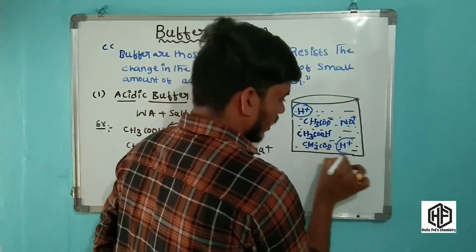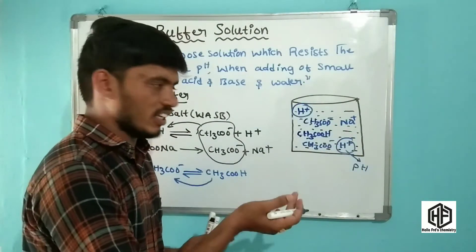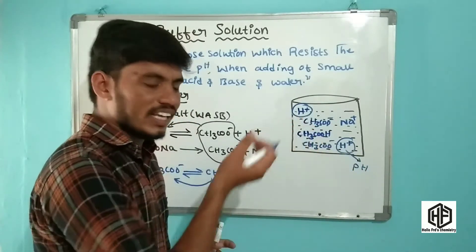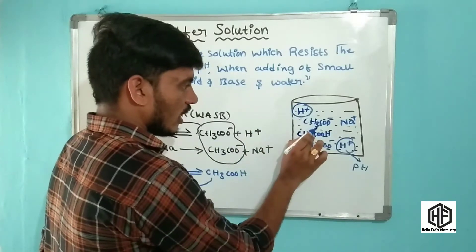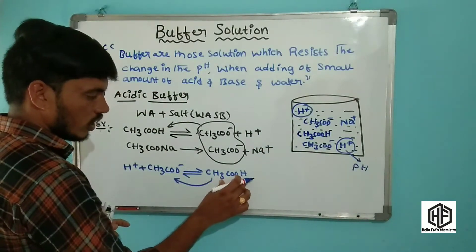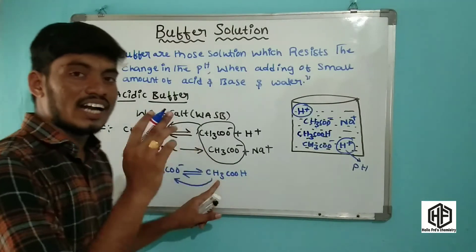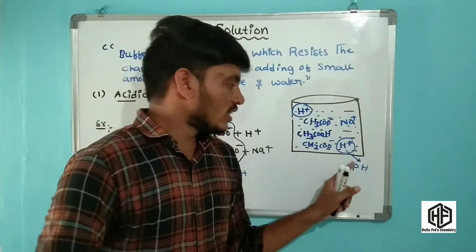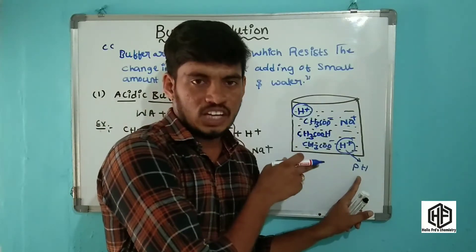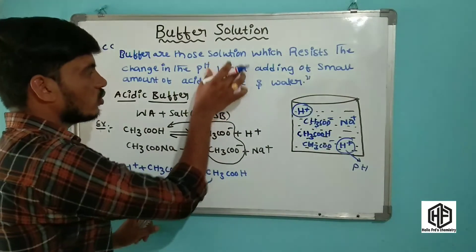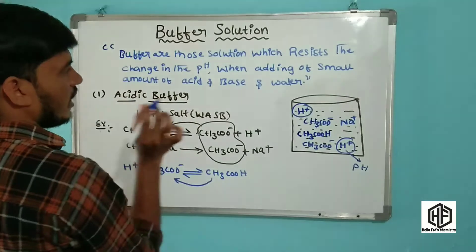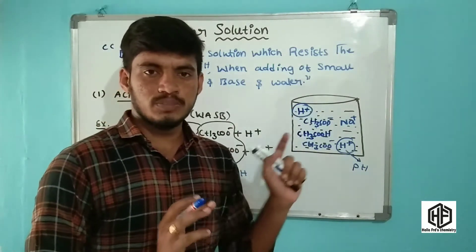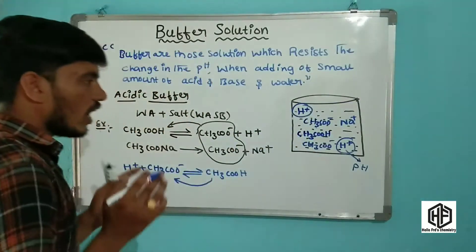Now, one important point is that acetate ions are present as common ions in this buffer solution. Due to the common ion effect, the equilibrium shifts in the backward direction. This causes the degree of dissociation of the weak electrolyte to decrease, meaning the small amount of dissociation is neglected. This is the main concept of the common ion effect in acidic buffers.